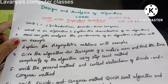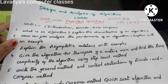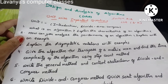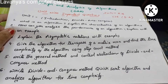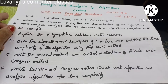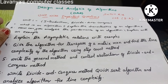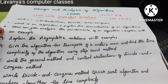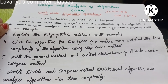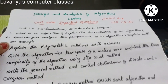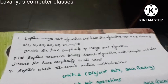Question 5: Write the general method and control abstraction of divide and conquer method. Question 6: Write the divide and conquer method for quicksort algorithm and analyze the algorithm for time complexity. Explain this with an example. These are the six questions, and some more questions are also there.